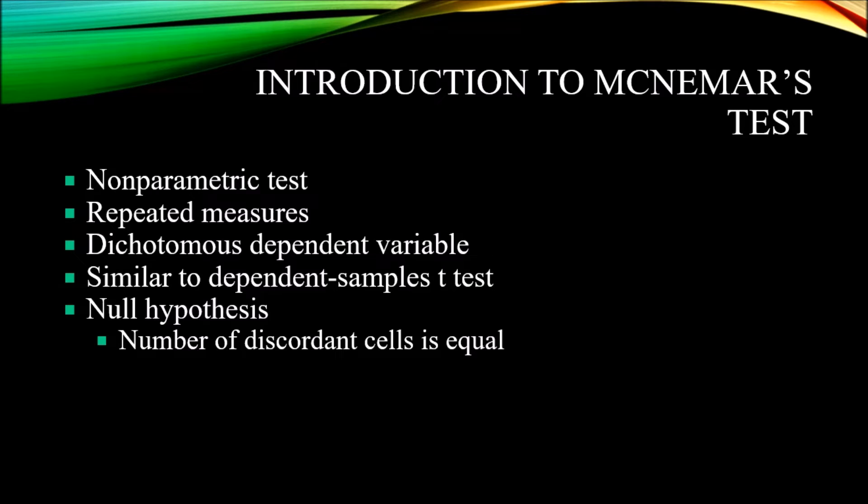These two categories, the participants that go from yes to yes, and no to no, that have no change, they're called concordant cells.